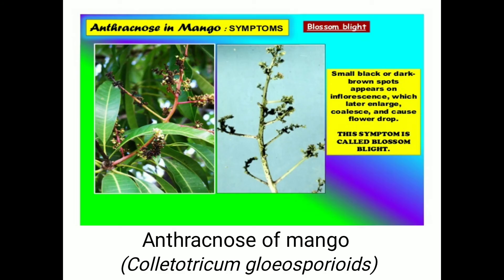The next disease is anthracnose of mango. Anthracnose refers to the sudden death of different parts of the plant within a short period of time — it is also a type of blight. Anthracnose of mango is caused by the causal organism Colletotrichum gloeosporioides; it is a fungal disease.